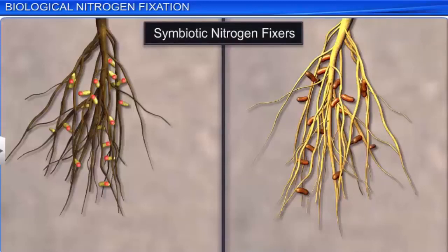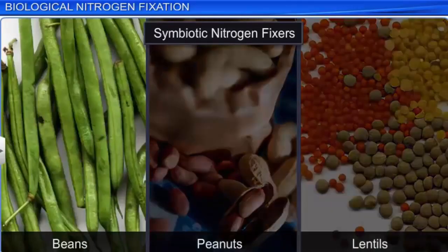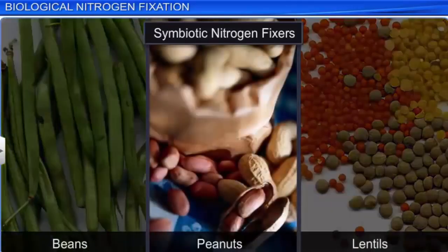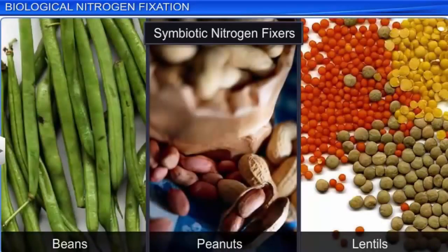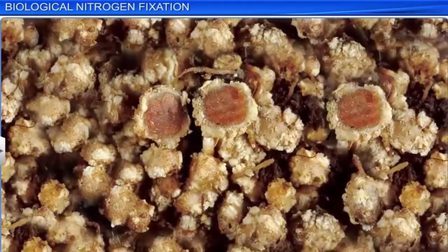Rhizobium is known for its symbiotic association in the root nodules of leguminous plants such as peanuts, lentils, and so on. Non-leguminous plants such as alder, alnus, and ceanothus also associate with frankia in the nodules of their roots for nitrogen fixation. These nodules in cross section appear red or pink due to the presence of an iron containing protein called leghemoglobin.